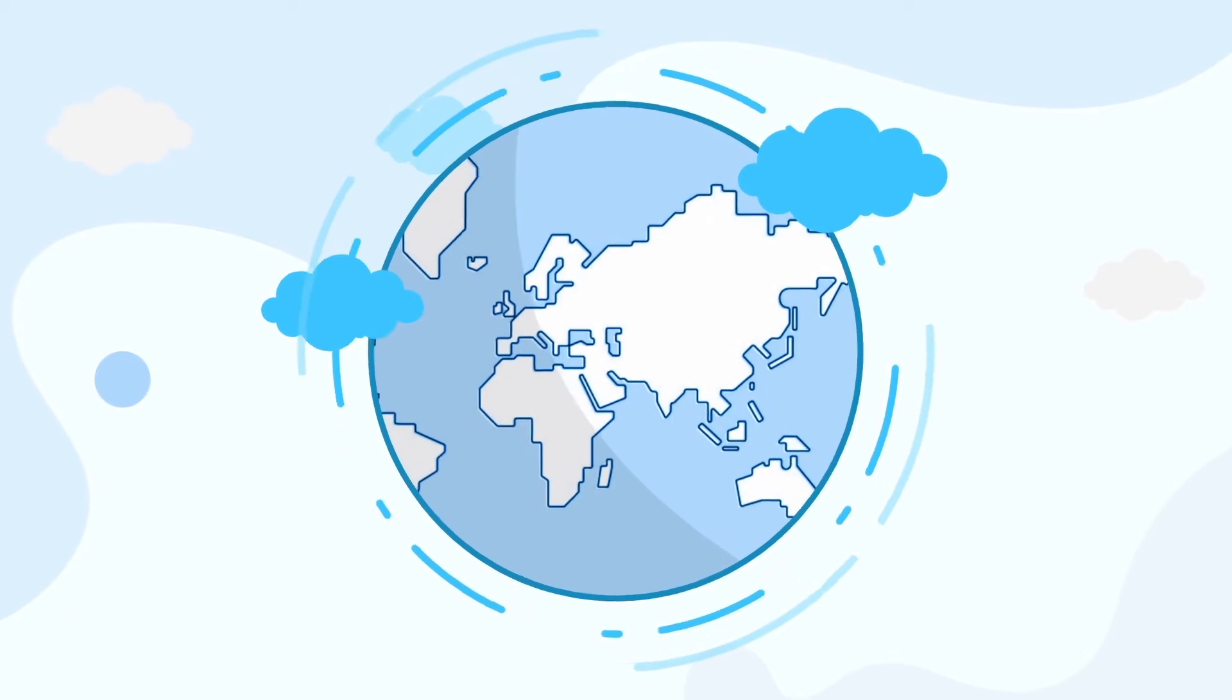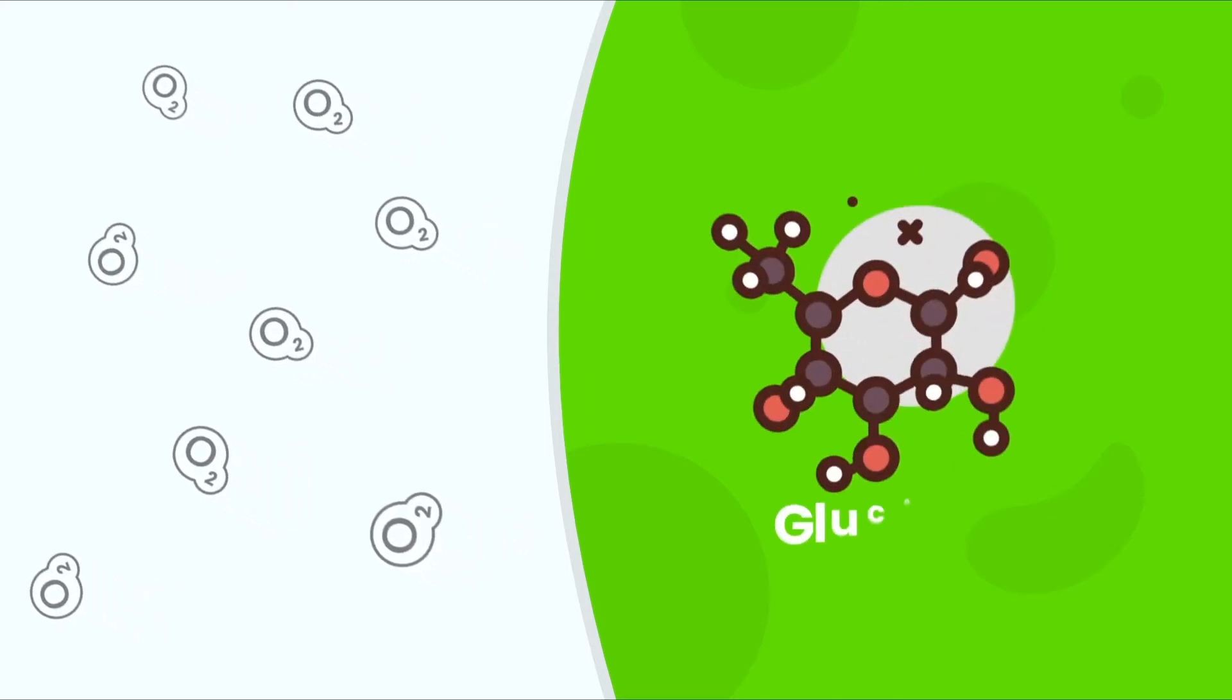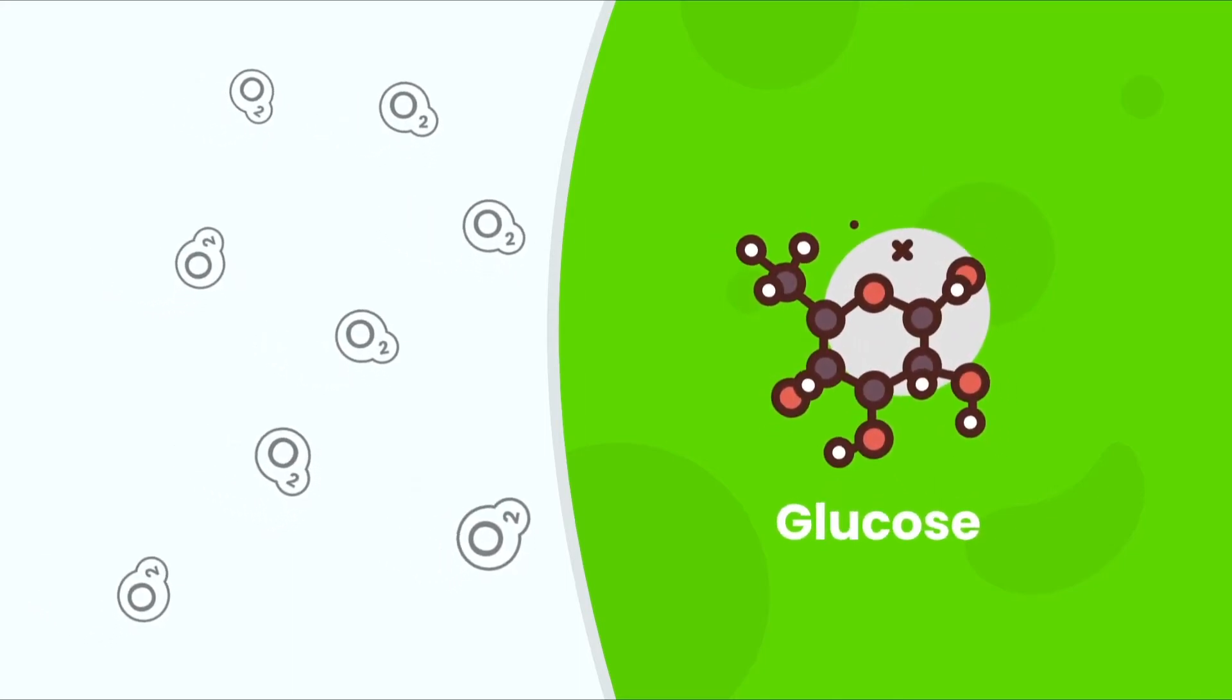In simple terms, photosynthesis is when carbon dioxide and water enter into a plant cell, water releases oxygen which we breathe, and carbon dioxide forms glucose, which is the energy for plants.